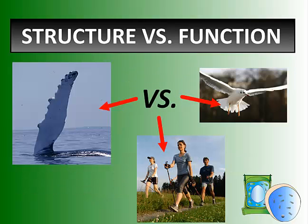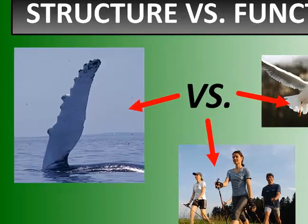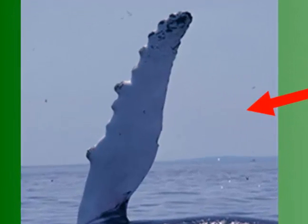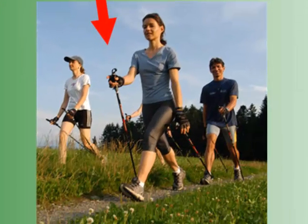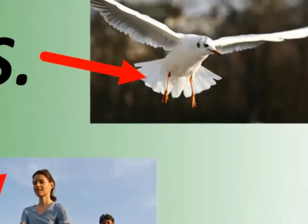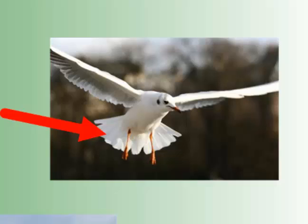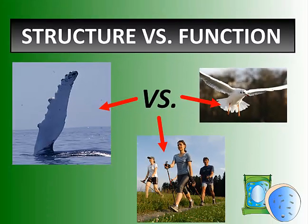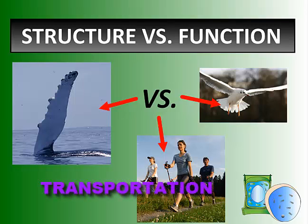Take a look at these three images — three different structures. On the left we have a fin from a large whale. On the bottom we have people walking. And then we have a bird, a seagull — the rat of the sky, some people call it. The fin, the leg, and the wing are all different structures, but they all perform the same function: transportation or movement.